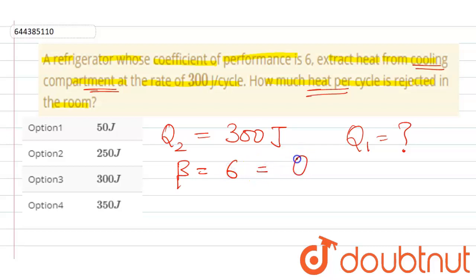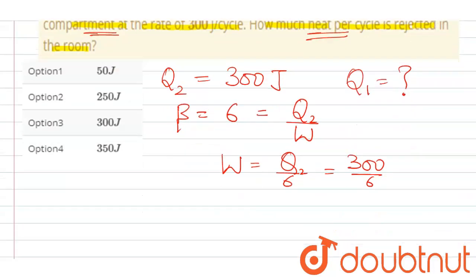Now the formula for beta is Q2 upon W. So here we get W equals Q2 upon 6, that means 300 upon 6. Now on solving here we get W equals 50 joule.